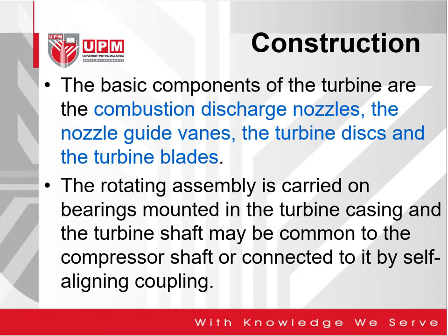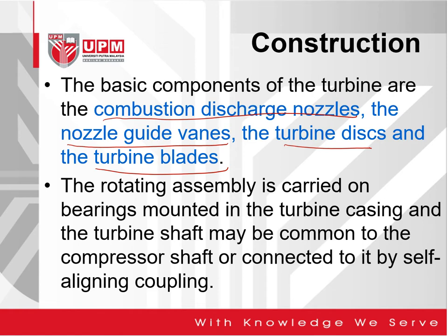The basic components of turbine are the combustion discharge nozzles, the nozzle guide vanes, turbine disk, as well as the turbine blade. We will look at each one of them in terms of how it is being constructed. The rotating assembly is carried on bearings mounted in the turbine casing, and the turbine shaft may be common to the compressor shaft or connected to it by self-aligning coupling.